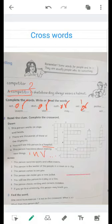Across. We have across. This person watches sport and other events. Of course, he is a spectator.